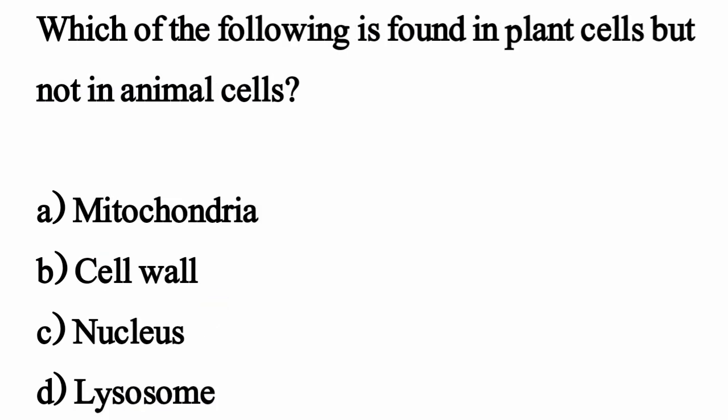Which of the following is found in plant cells but not in animal cells? The correct option is Option B: Cytoskeleton.